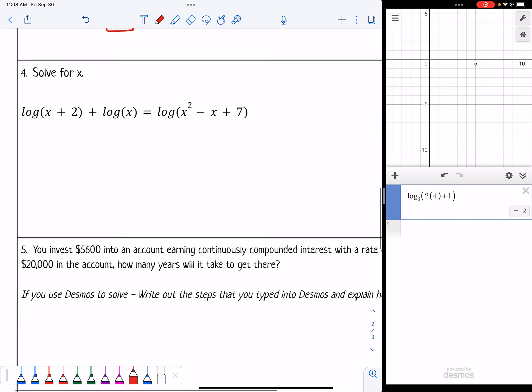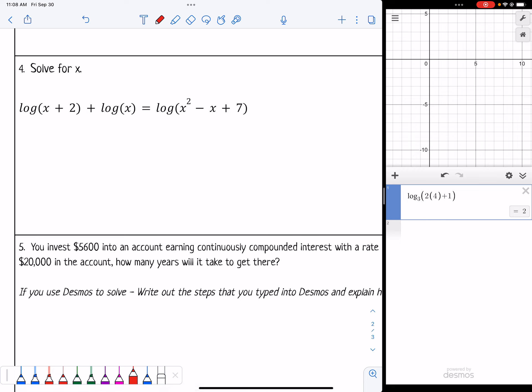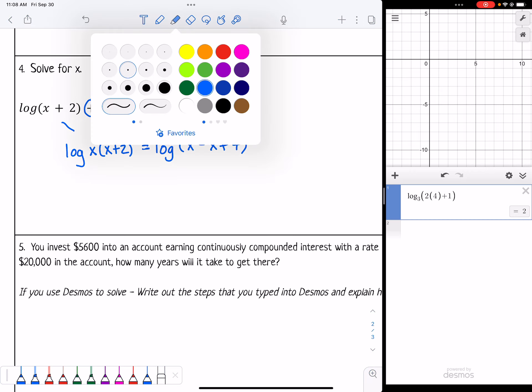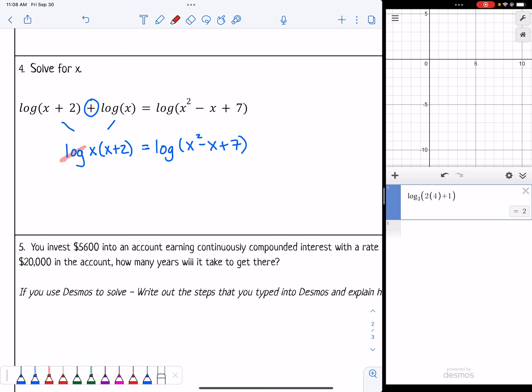Let's do number 4. We have solve for x, and we have 3 logs. We can't do anything until we combine these two that are on the same side. Using our log properties, I see they're adding together, so I need to multiply and say that's log of x times x plus 2 on that side equals log of x squared minus x plus 7 on the other side. I can notice I have log on one side and log on the other side, and I don't have anything extra added or subtracted. So I'm allowed to cancel those out and bring down what's left.